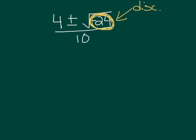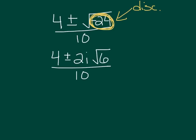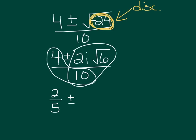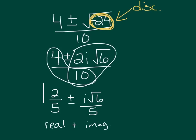We learned how to solve imaginaries, so we keep going. The square root of 24 breaks down — the perfect square that goes into 24 is 4. So we've got 4 plus or minus: take out an i for the negative, take out a 2 for the 4, giving 2i, and then you have a root 6 left, all over 10. Since this is real plus imaginary, we've got 4 tenths which is 2 fifths, plus or minus — the 10 goes with both the 4 and the 2i√6 — so 2 over 10 is 1 fifth: i√6 over 5. So that means we have two complex solutions.